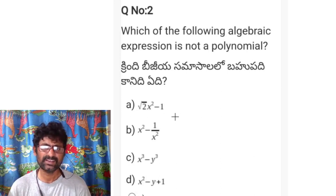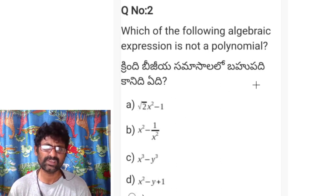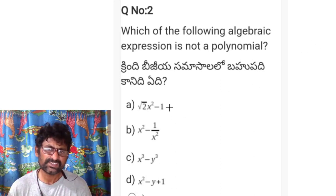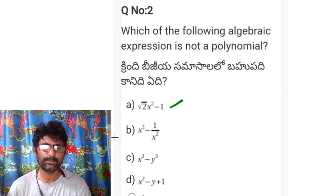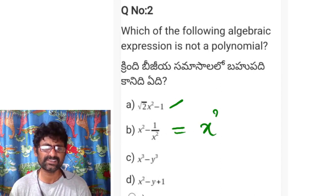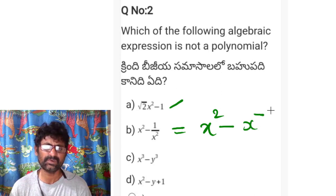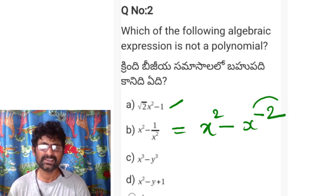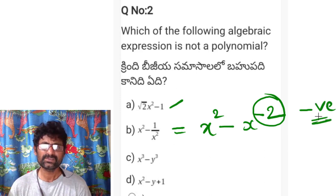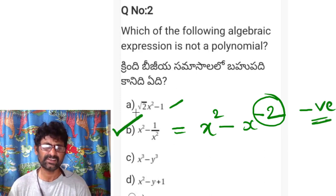Observing option A: 2x² - 1 is clearly a polynomial. For option B, we can rewrite it as x² - 1/x², where 1/x² can be written as x to the power negative 2. Here the exponent is negative, so this is not a polynomial. Therefore option B is correct.